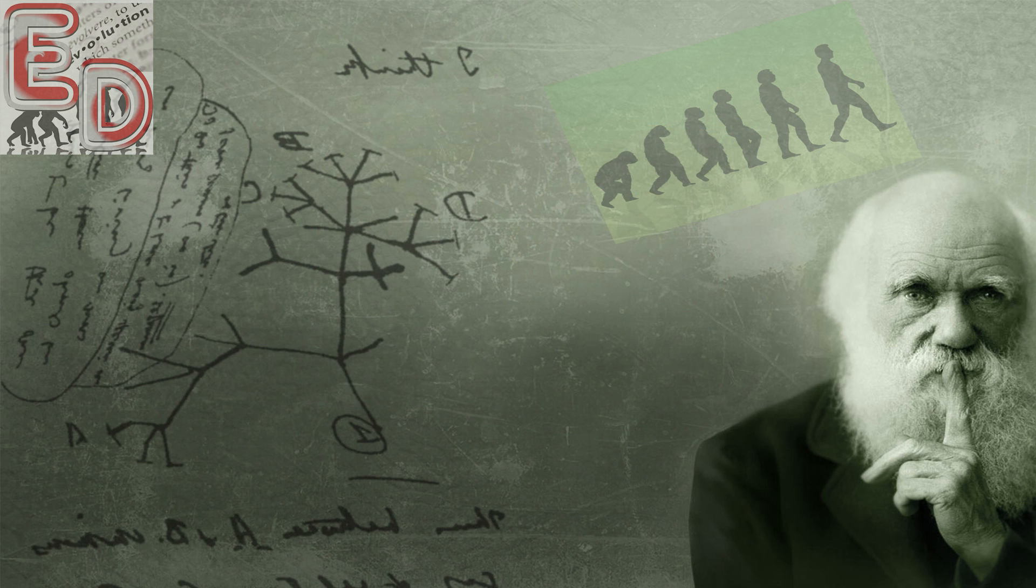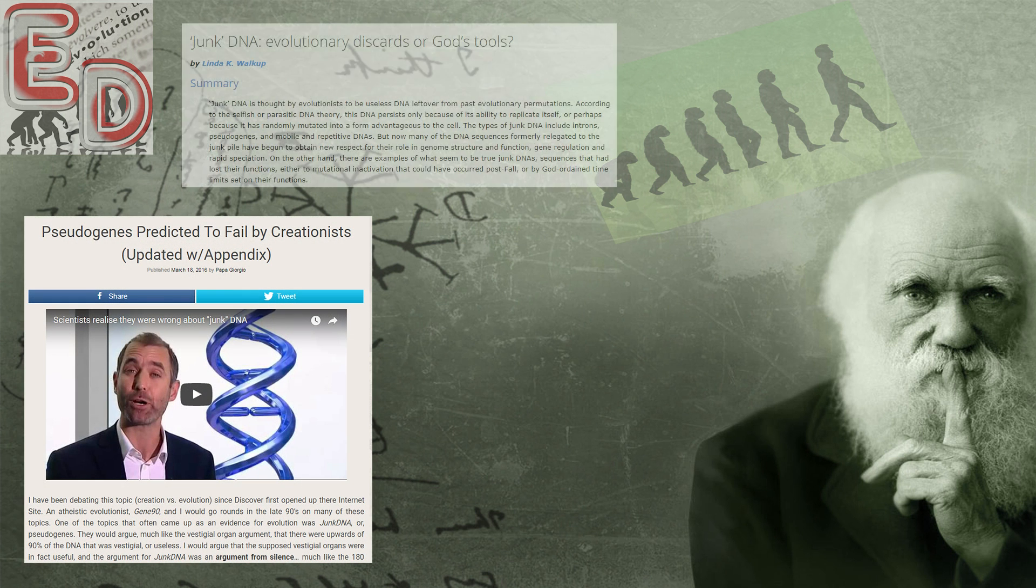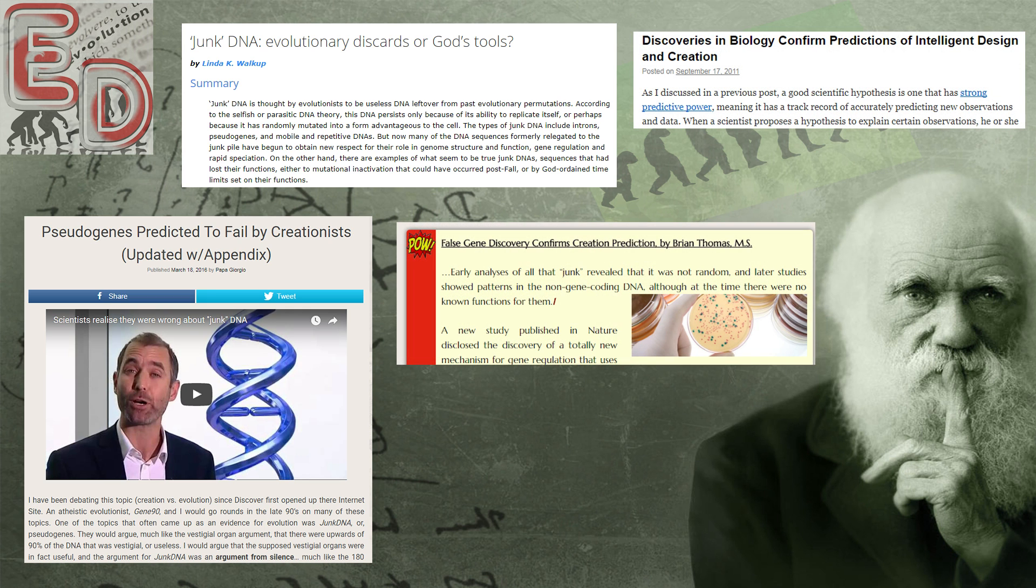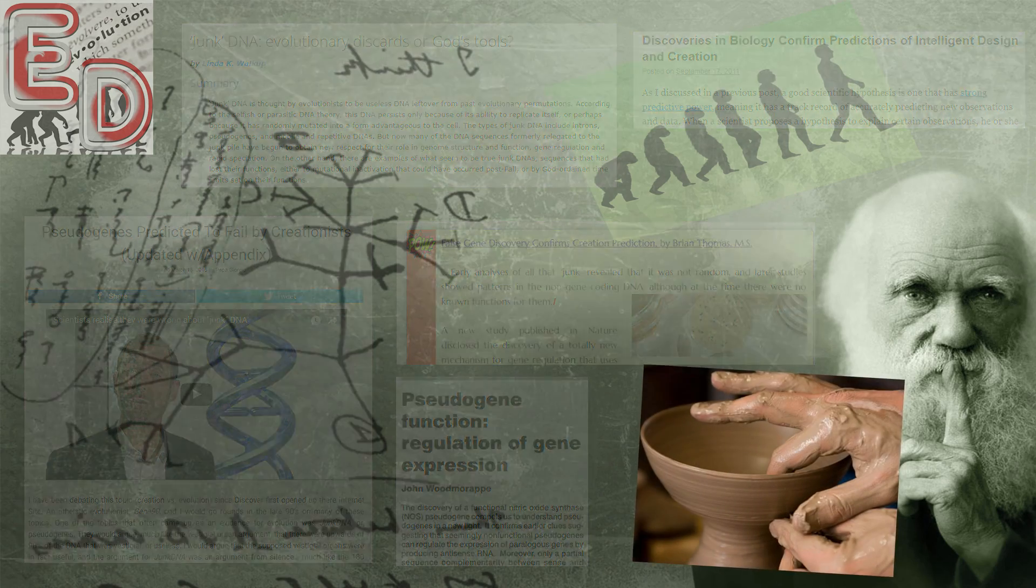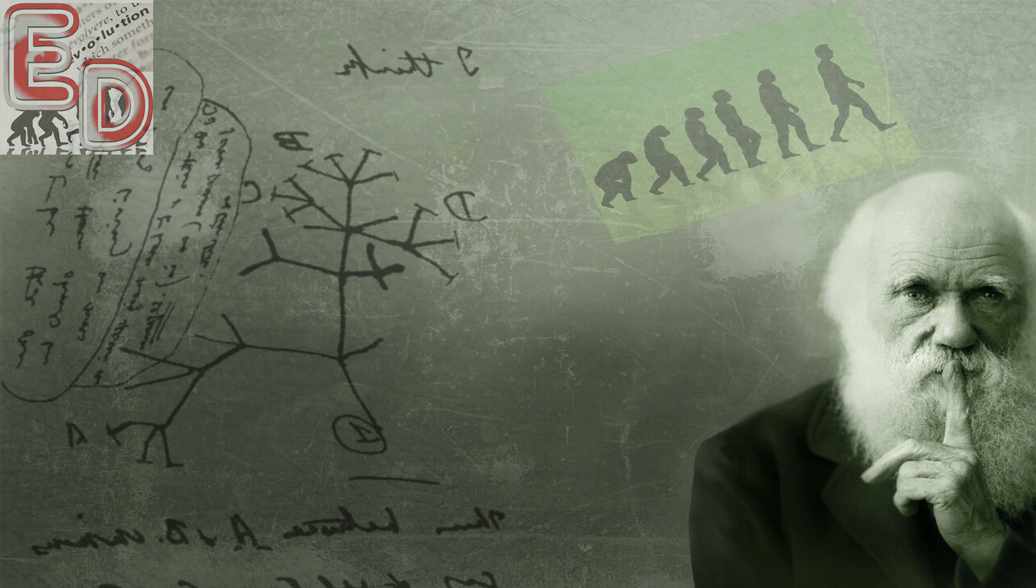It's also important to point out that the creation model successfully predicted that junk DNA actually had function. Successful predictions are said to be the fruits of a good scientific theory. Yet when the creation model offers successful predictions, which happens much more often than most people know, the issue is simply swept under the rug and evolution is retroactively claimed to have made the prediction.